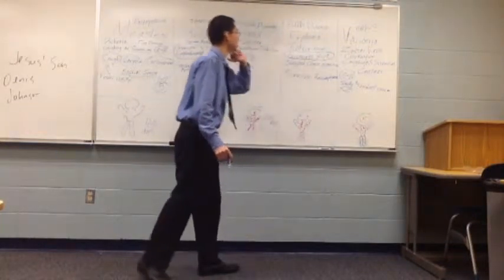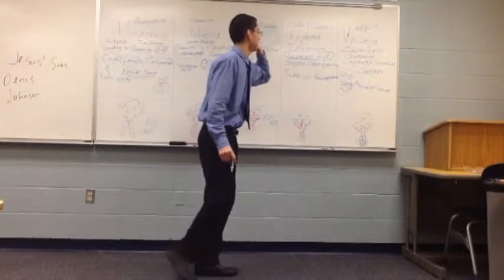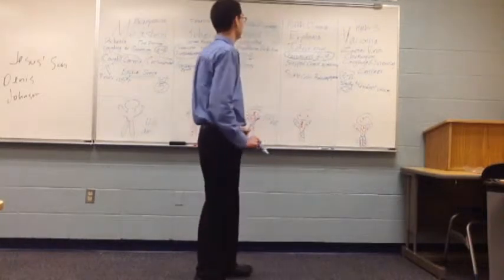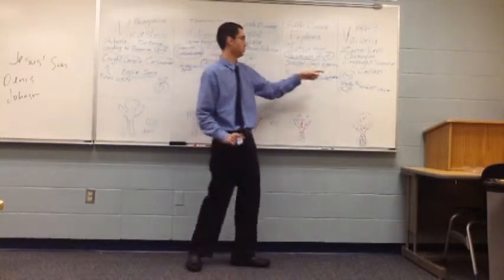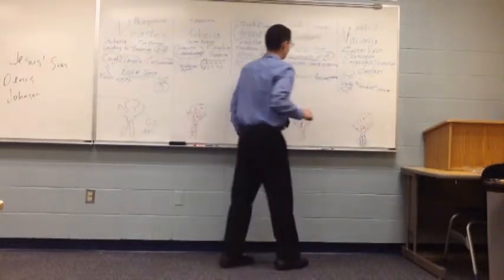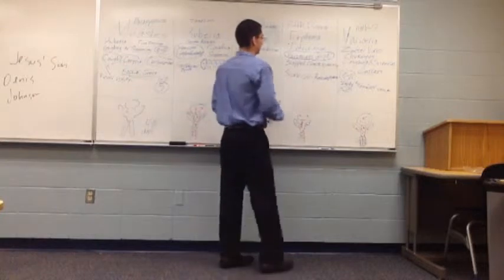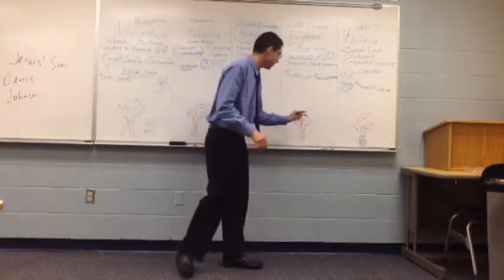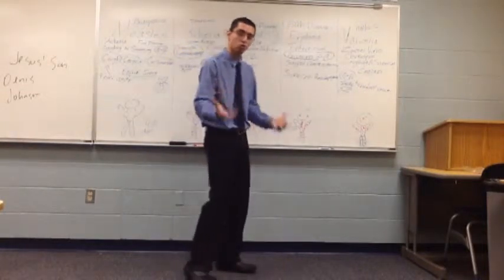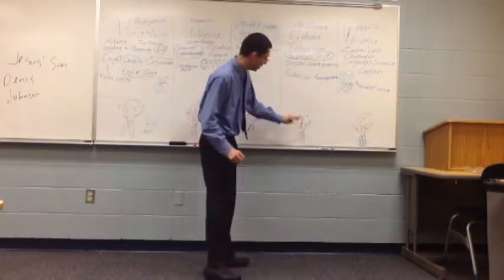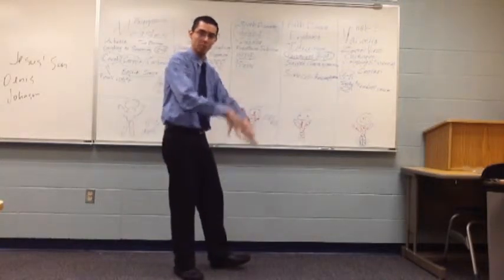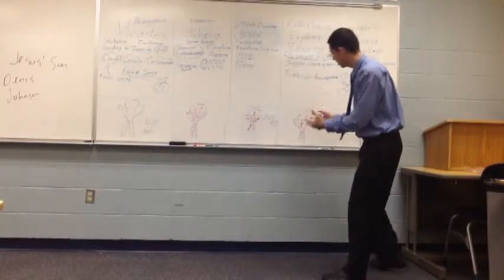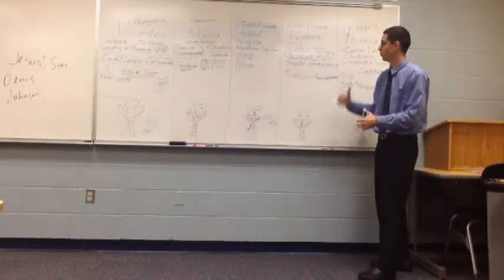Next is erythema infectiosum, fifth disease. All of you have heard about the slapped cheeks appearance. That is because the rash for erythema infectiosum begins on the cheeks and then spreads to the trunk, arms, and legs in a very net-like formation. That's how it appears on the patient who is infected with erythema infectiosum.